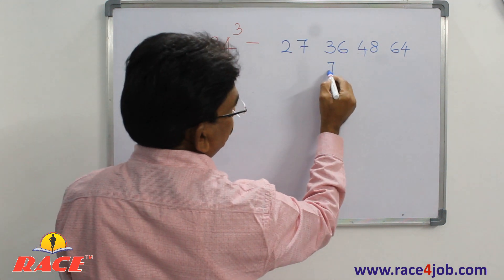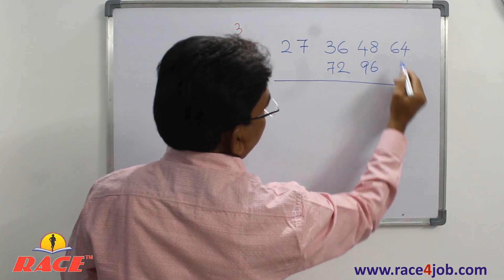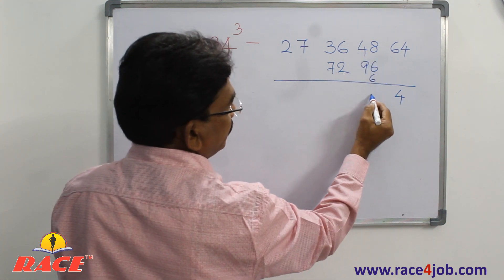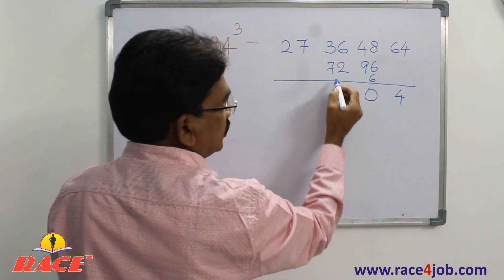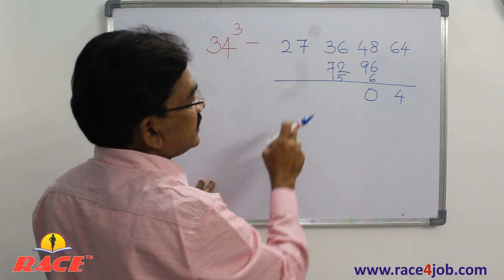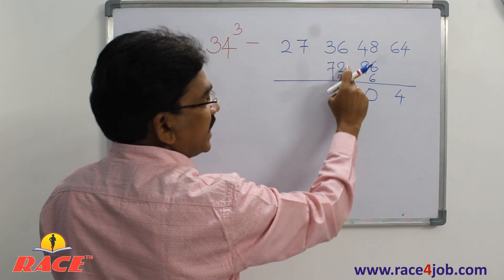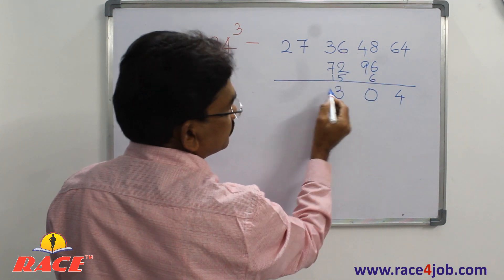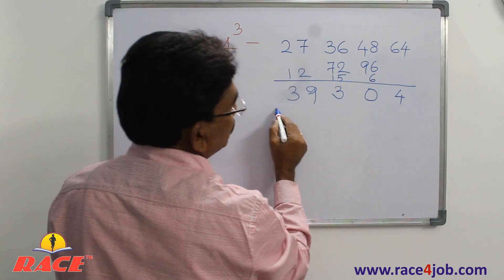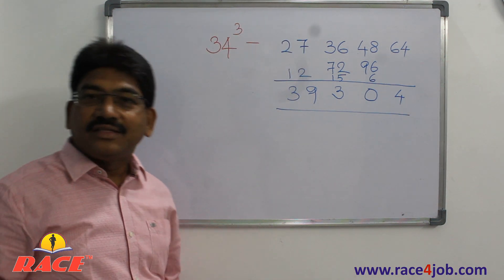Double the middle numbers: double of 36 is 72, double of 48 is 96. Now add. Write only 4 from 64, carry 6. Then 96 plus 6 carry is 102 — no, 6 plus 96 is 102; write only 2, carry 10. Adding 72 plus carries: the running total becomes 123; write 3, carry 12. Then 27 plus 12 is 39. So the answer is 39304. Thirty-four cubed is 39304.